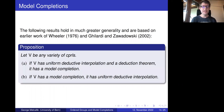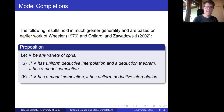What does this all have to do with model completions? There are some relationships already known in the literature, due to Wheeler and Ghilardi and Zawadowski. For any variety V of CPRLs: if V has both uniform deductive interpolation and a deduction theorem then it has a model completion. Conversely, if V has a model completion it has uniform deductive interpolation. So what's missing to obtain our main theorem is simply: if V has a model completion then it has a deduction theorem. That's what we're going to focus on.